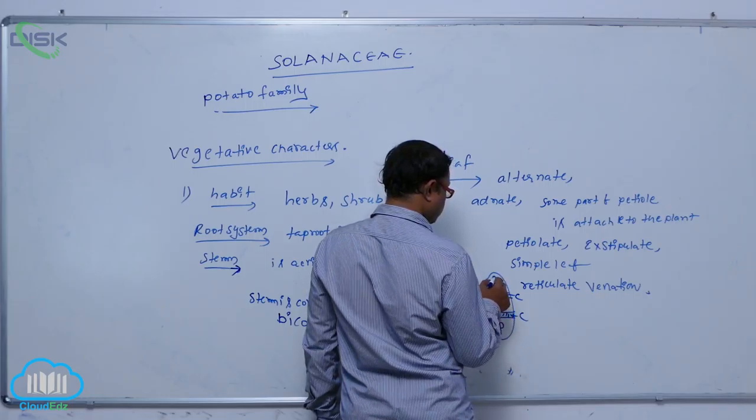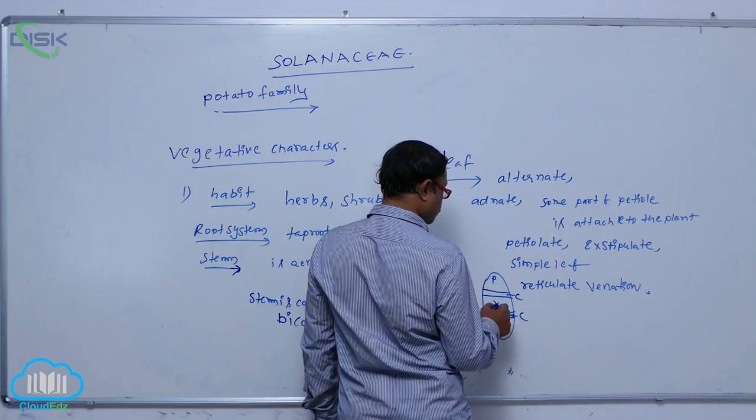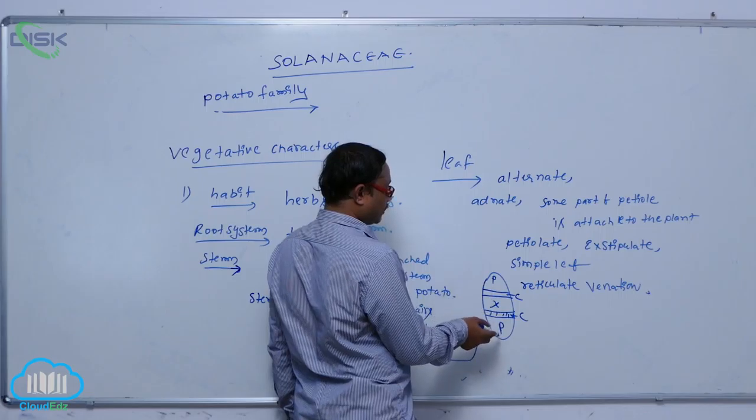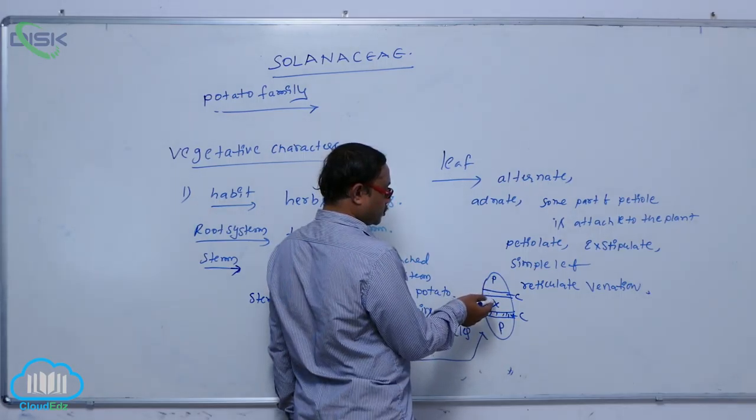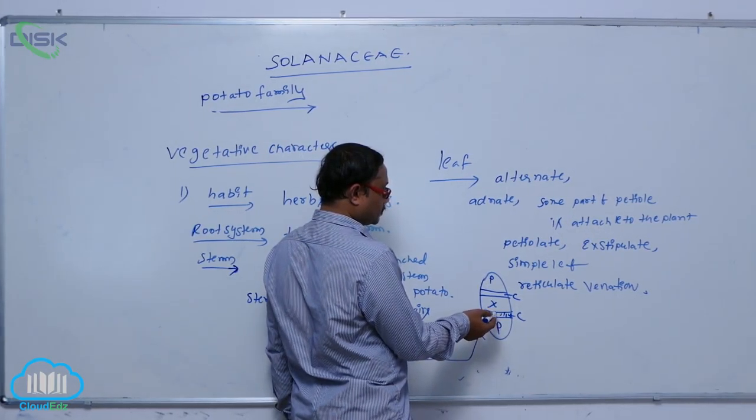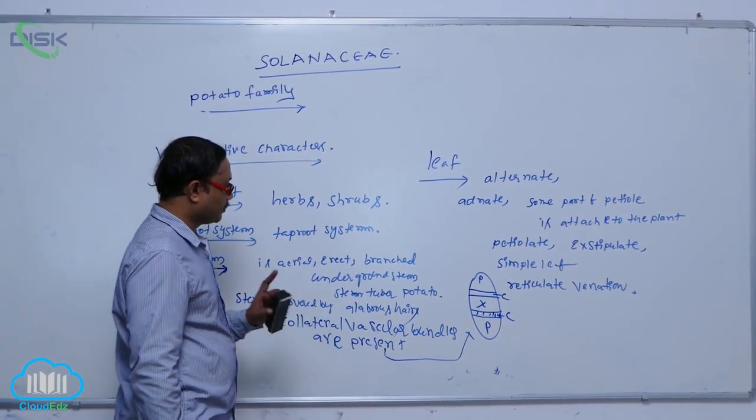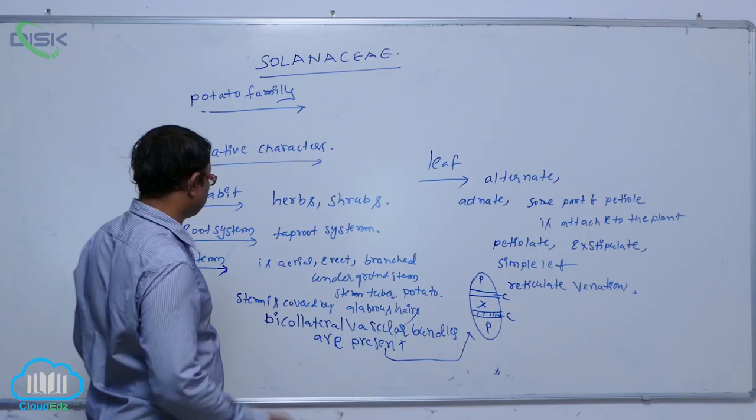It means two phloems, one xylem, two cambium at the center part. Xylem surrounded by phloem, separated by cambium. That is known as bi-collateral vascular bundles.